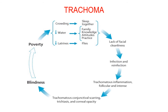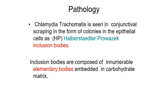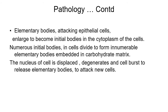The infection remains endemic in the community. Chlamydia in conjunctival scrapings is seen in the form of colonies within epithelial cells, known as Halberstaedter-Prowazek (HP) inclusion bodies. These inclusion bodies are composed of innumerable elementary bodies embedded in a carbohydrate matrix. The elementary bodies attack epithelial cells and become initial bodies in the cytoplasm, which then divide to form innumerable elementary bodies.